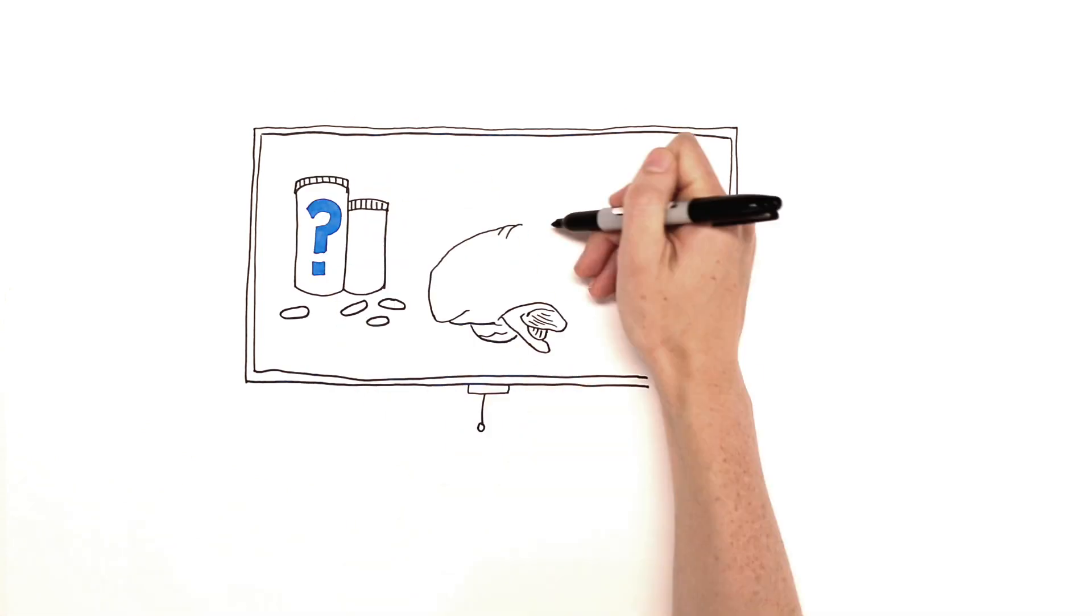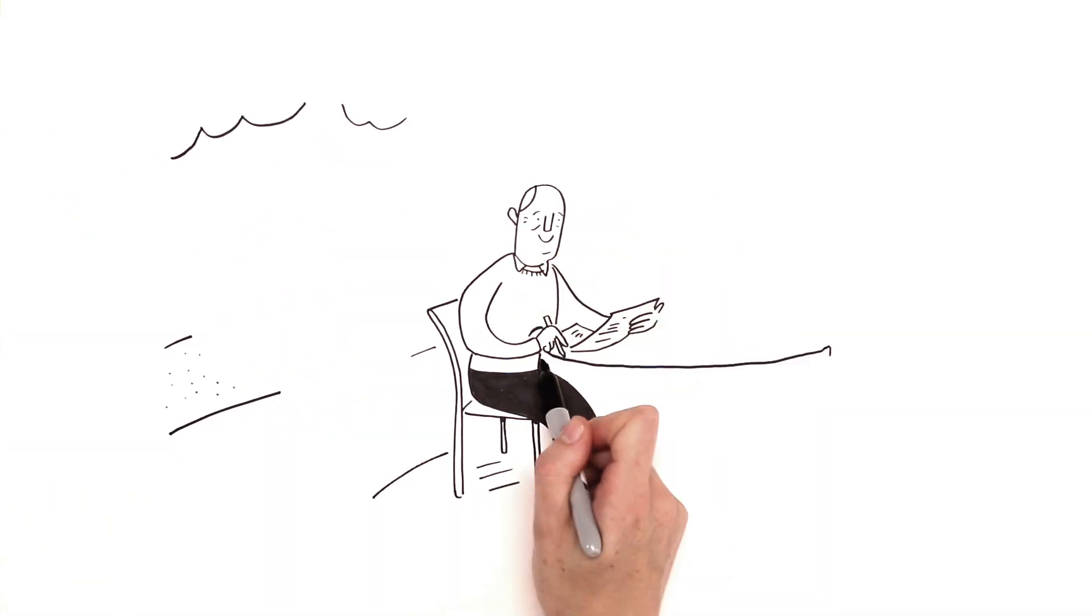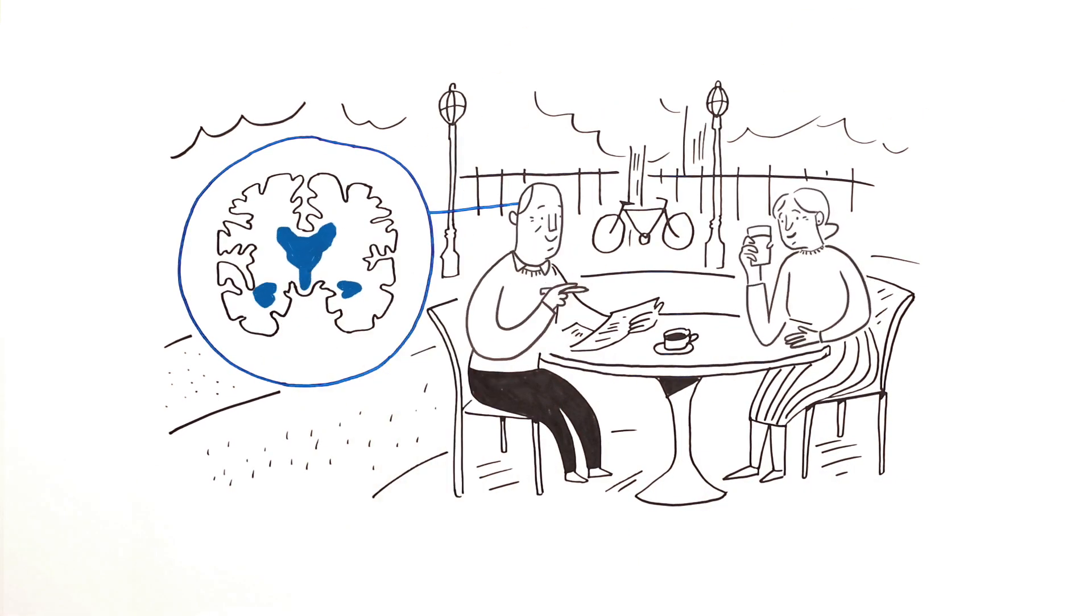There's no cure for Alzheimer's disease but research continues to provide new insight into how it affects the brain. We now know that Alzheimer's starts at least 10 years before symptoms appear.